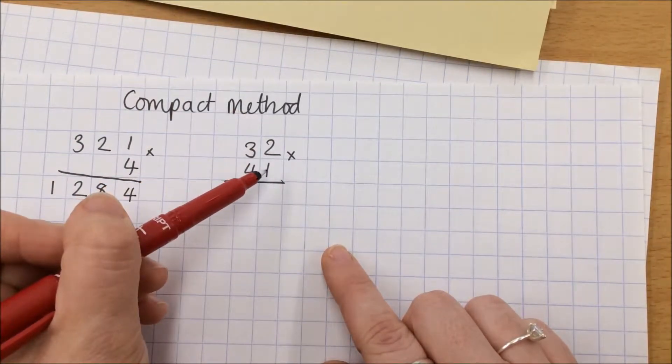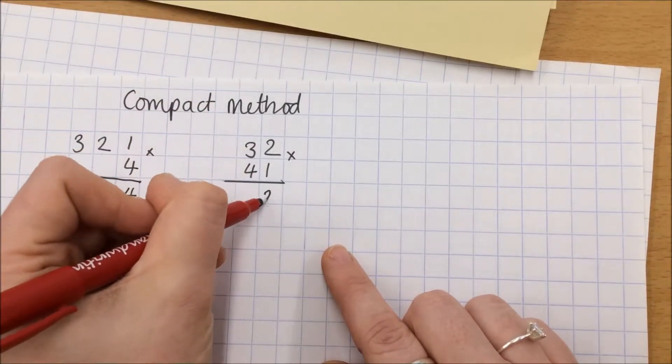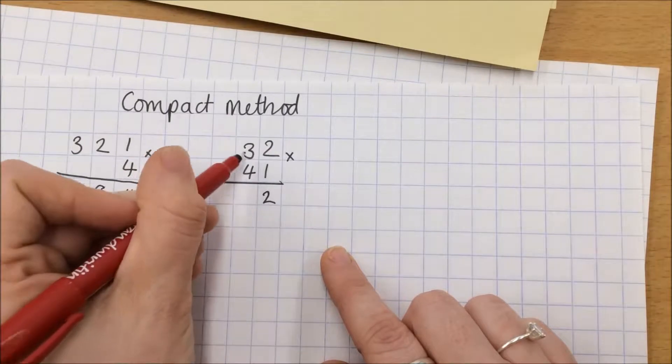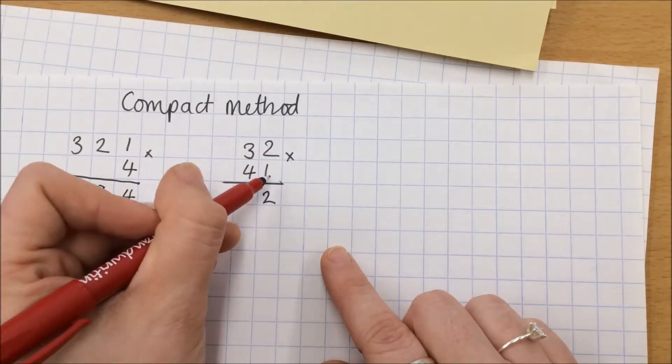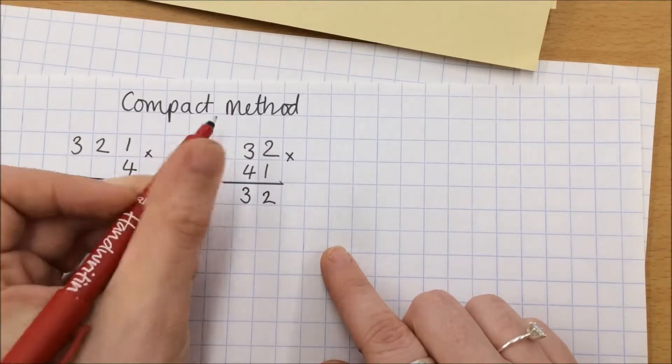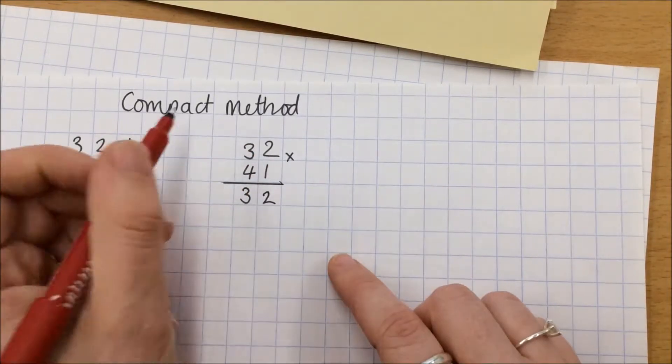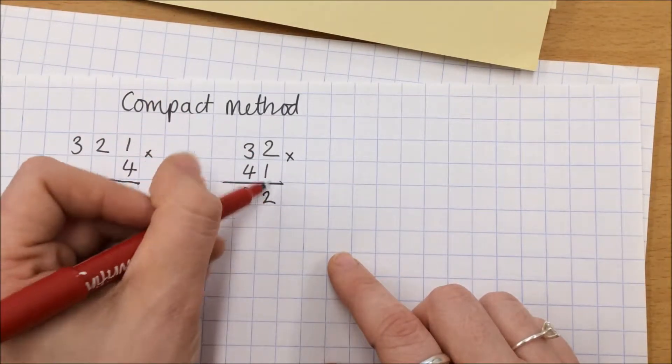2 times by 1 is 2. 3 times by 1, or 3 tens, 30 multiplied by 1 is 3, and that makes a lot of sense because 32 multiplied by 1 is of course 32. Now we're going to go underneath it to do our multiplication of the 40.